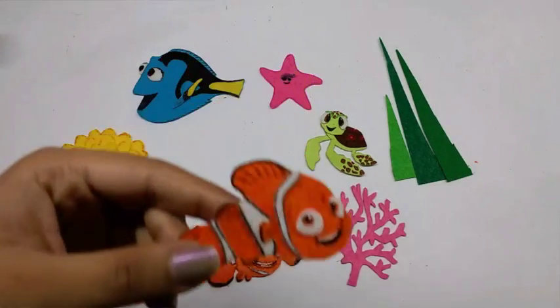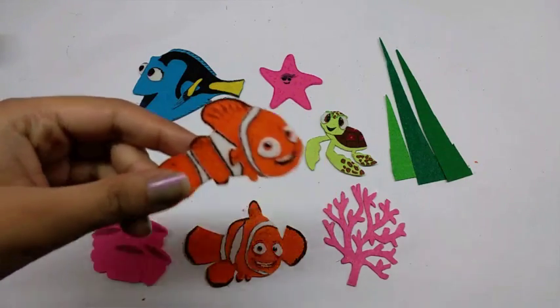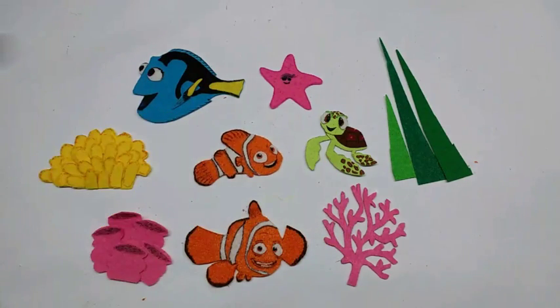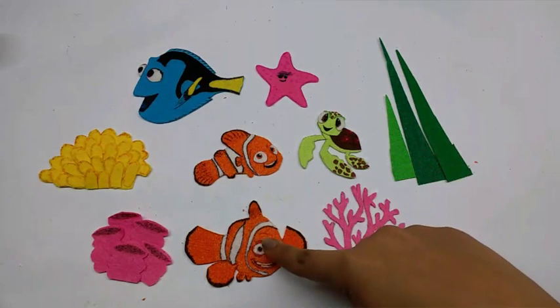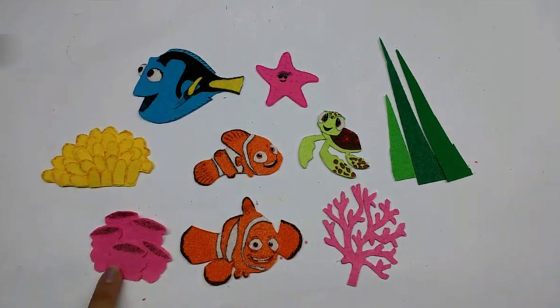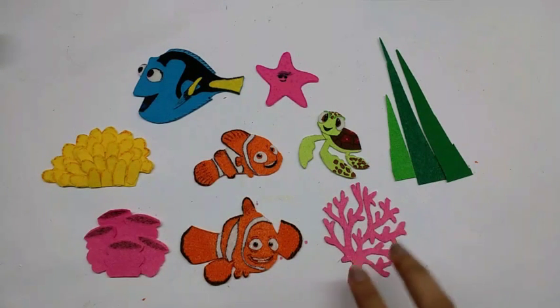And this is how Nemo would look after I have finished it. I have made the other characters: Dory, starfish, Squirt, Marlin, and the seaweeds and the sea shells and all. So now I am going to go on with the box.